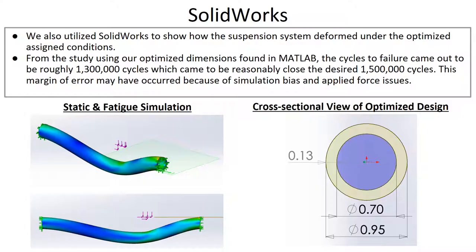We also utilized the SolidWorks program to show how the suspension system deformed under the optimized assigned conditions. From the study using our optimized dimensions found in MATLAB, the cycles of failure came out to be roughly 1,300,000 cycles, which came reasonably close to the desired 1,500,000 cycles. This margin of error may have occurred because of the simulation's bias and applied force issues.